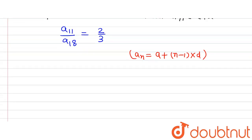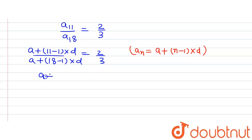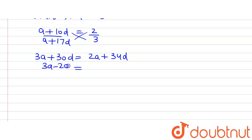Where A is the first term, D is the common difference, and N is the number of the term. So we write A plus (11 - 1)D divided by A plus (18 - 1)D equals 2 divided by 3, giving us (A + 10D) / (A + 17D) = 2/3. On cross multiplication: 3A + 30D = 2A + 34D.